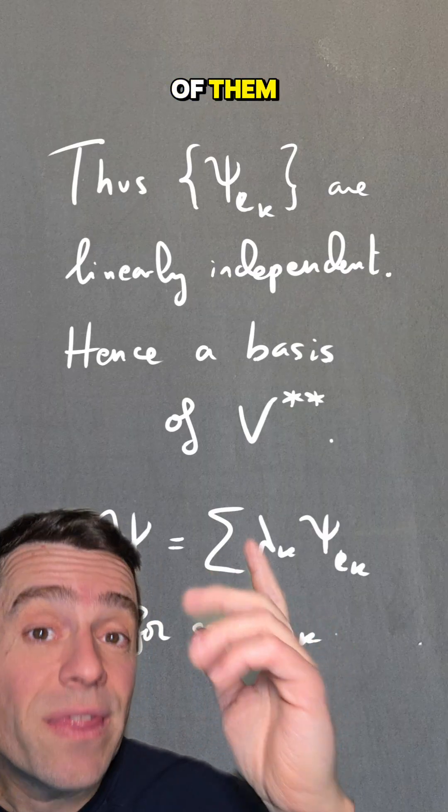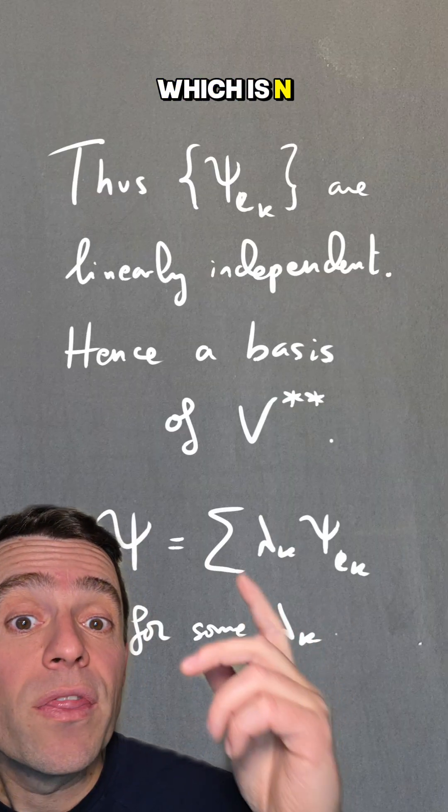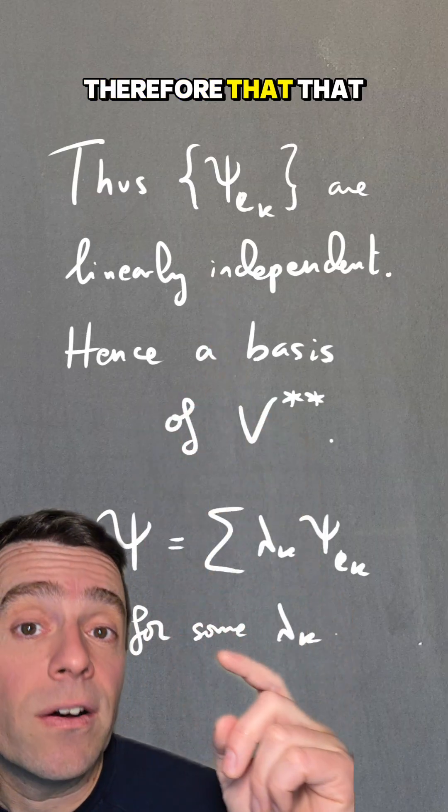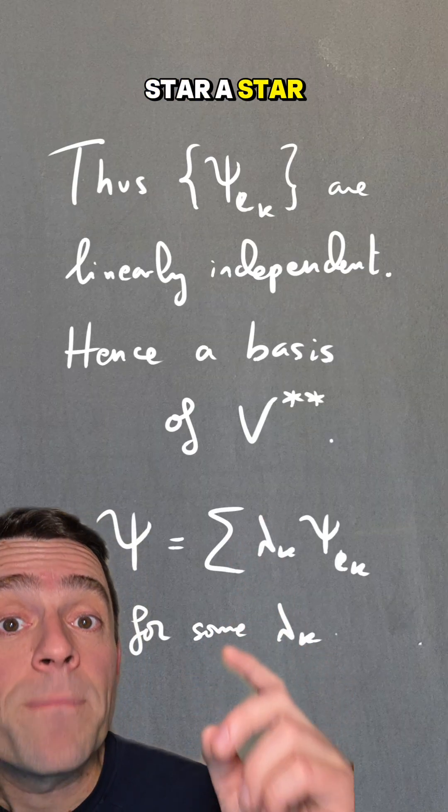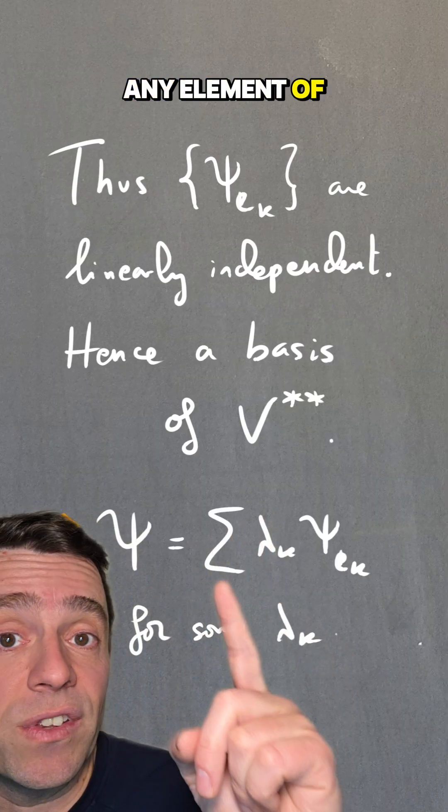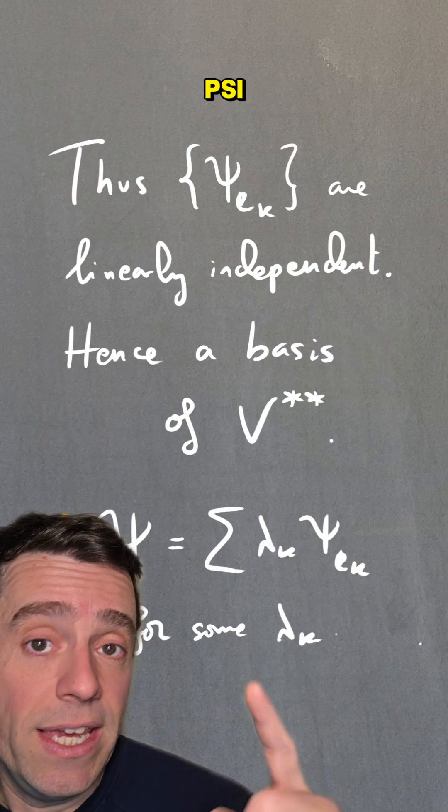So we have shown that the ψ_e_k are linearly independent. There are n of them. The dual of the dual has the same dimension as V, which is n. Therefore, that set is a basis of V**. That means any element of the double dual is a linear combination of those ψ_e_k's.